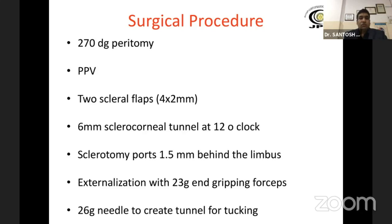The surgical procedure includes a 270-degree peritomy from 4 to 8 o'clock position. In almost all cases I perform a complete vitrectomy and make two scleral flaps of 2×4 mm dimensions, 180 degrees apart at 9 o'clock position, then proceed to make a 6 mm sclerocorneal tunnel at 12 o'clock. Sclerotomy ports are positioned 1.5 mm behind the limbus, and externalization of the haptics is done with a 23-gauge end-grasping forceps. Tucking of the IOL haptic is facilitated by using a 23-gauge needle which is bent to create a tunnel for the tucking.